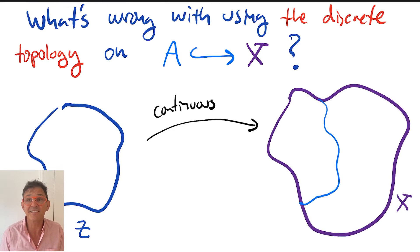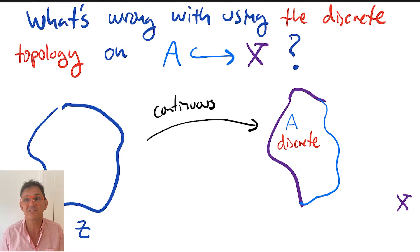which will not be continuous when viewed as a map into A with the discrete topology.